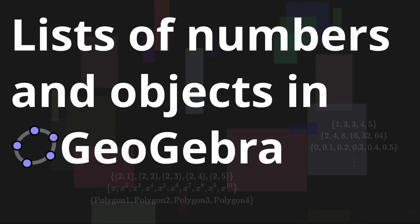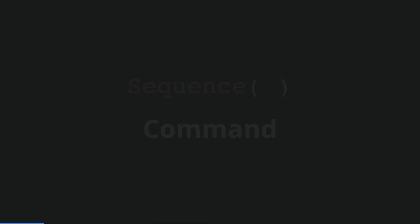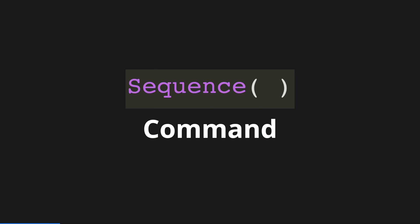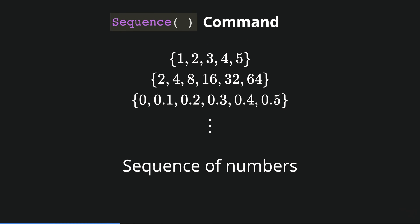Hello everybody. In this video I would like to show you how to create lists of numbers and objects in GeoGebra. The command we are going to use is the sequence command, with which we can create lists of integral numbers, fractions, or decimal numbers.